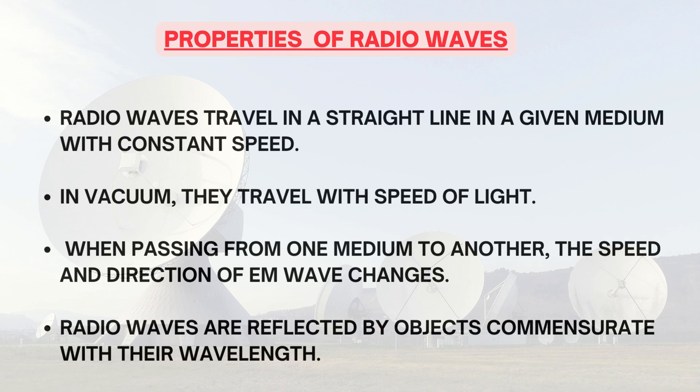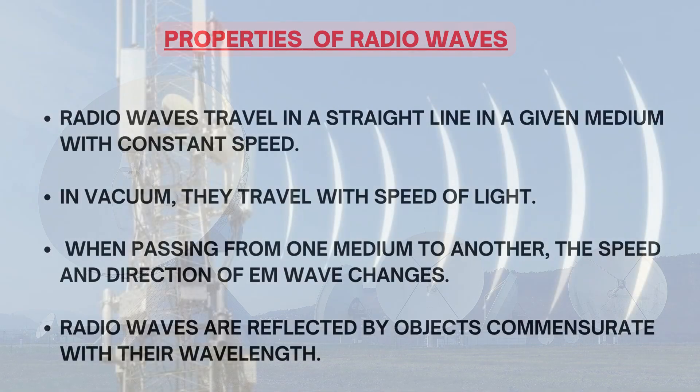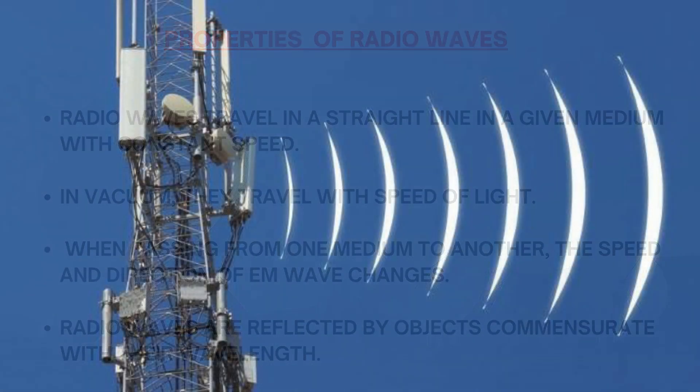Radio waves are reflected by objects commensurate with their wavelength — this point is important and we will discuss it later. When radio waves are transmitted from an antenna they have certain power, but as the distance from the transmitter increases the signal strength keeps reducing. This happens as per the inverse square law.